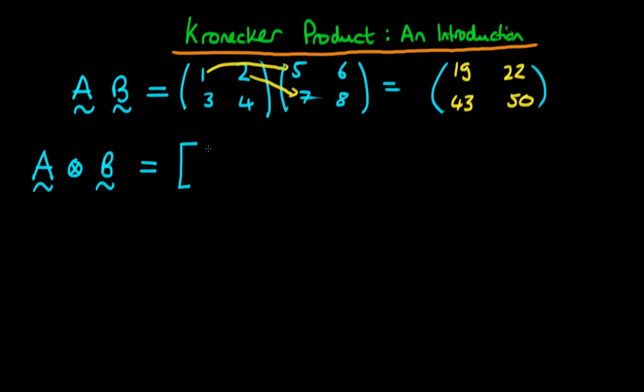So the idea here is, let's say we have a 2 by 2 matrix A which is A11, A12, A21, and A22, and we're taking the Kronecker product of that matrix with a matrix B which is defined as B11, B12, B21, and B22.